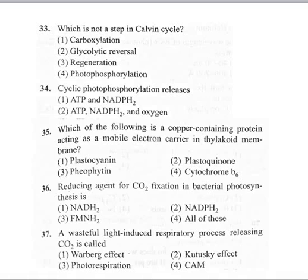36th question: the reducing agent for carbon dioxide fixation in bacterial photosynthesis is option 1 NADH2, option 2 NADPH2, option 3 FmNH2, option 4 all of these. In bacterial photosynthesis, the reducing agent for carbon dioxide is NADH2. In normal plant photosynthesis the reducing agent is different, but in bacterial photosynthesis it is NADH2. So the first option is the right answer.